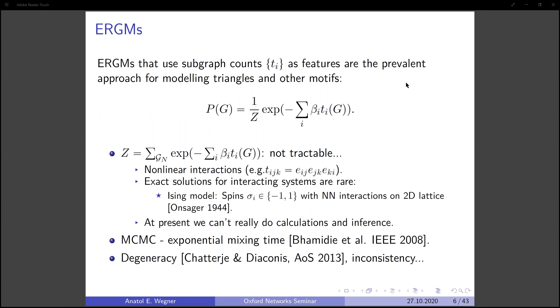Systems with interactions are quite hard and there exist exact solutions for very few cases — even in the much simpler case of a spin system with nearest-neighbor interactions on a two-dimensional lattice. An exact solution is only known in two dimensions without an external magnetic field, and that exact solution is regarded as one of the landmark results in theoretical physics. Realistically, our capacity to obtain exact solutions for models with interactions is around the level of the two-dimensional Ising model.